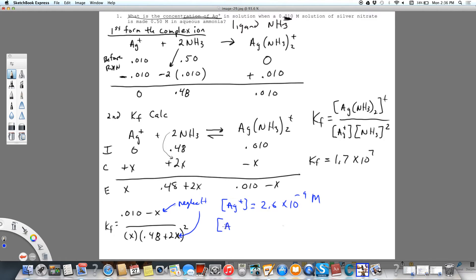Our complex ion is as we said 0.10 minus x. So that's going to equal 0.10 molar because x again is incredibly small. And ammonia is going to equal 0.48 minus 2x which also equals 0.48 molar because x is very very small.